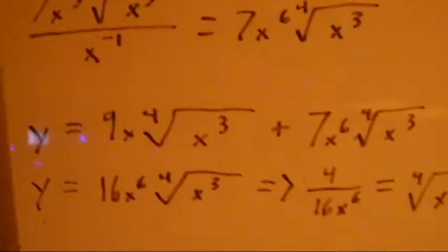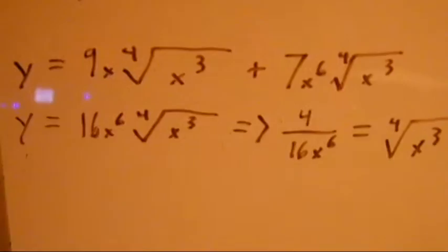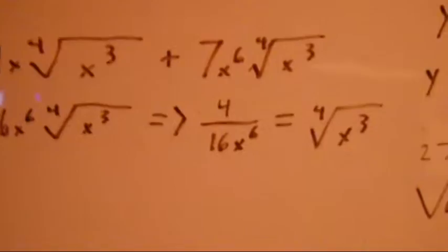Y equals 9x to the 4th radical of x to the 3rd plus 6x to the 6th to the 4th radical of x to the 3rd. Y equals 16x to the 6th to the 4th radical of x to the 3rd.